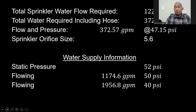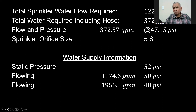The total sprinkler water flow required is 122.57 GPM, and adding the hose allowance of 250 GPM, the total water required is 372.57 GPM. Based on our hydraulic calculations, the result would be 47.15 PSI at 372.57 GPM with a sprinkler orifice size of 5.6.